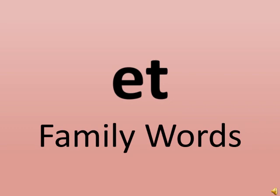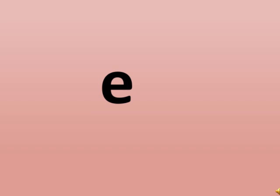Now children, on the screen you can see letter E. And what sound does E make? E says 'eh', E says 'eh'. And next to E, joining letter E, is letter T, and T says 't', T says 't'. So children, when we see E and T together we say 'ET'. E says 'eh' and T says 't', so when they are together the sound they make is 'ET'.